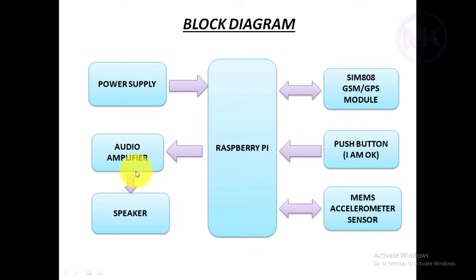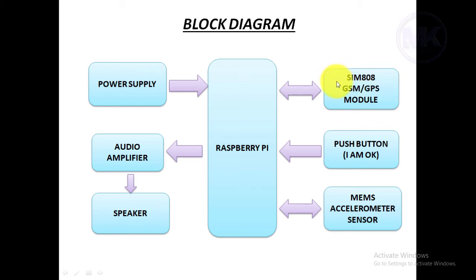Initially, power supply is given to the Raspberry Pi and all other components. Then Raspberry Pi communicates with the SIM808 module. The purpose of this SIM808 module is to detect the location of the vehicle and send SMS. The main advantage of this module is it has both GSM and GPS integrated on a single chip.